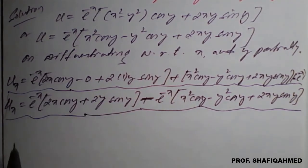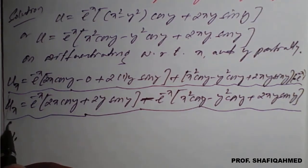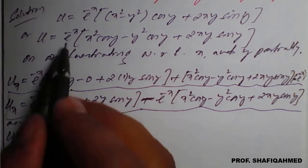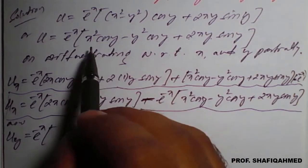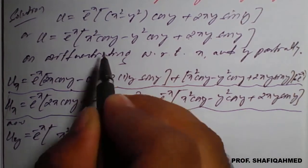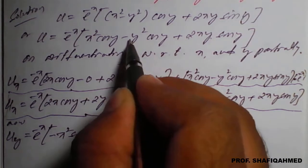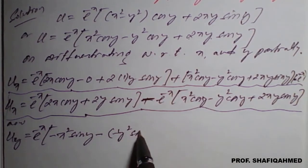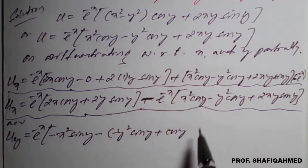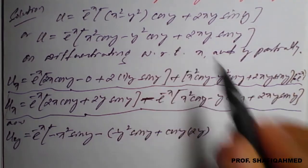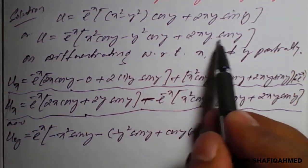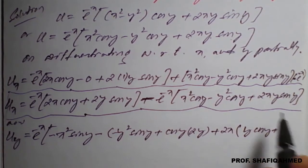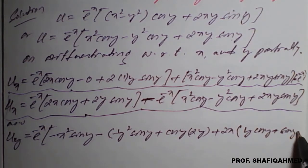Now we go for u with respect to y partially. While differentiating with respect to y, we treat x as a constant, so e^(−x) is a constant. x² is a constant, and differentiation of cos y is −sin y. For the −y² cos y term, we use the product rule: keep y² and differentiate cos y to get −sin y, plus keep cos y and differentiate y² to get 2y. For the 2xy sin y term, 2x is a constant; applying the product rule, keep y and differentiate sin y to get cos y, plus keep sin y and differentiate y to get 1.